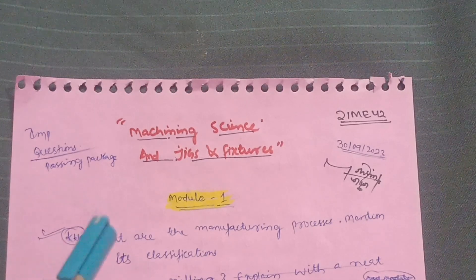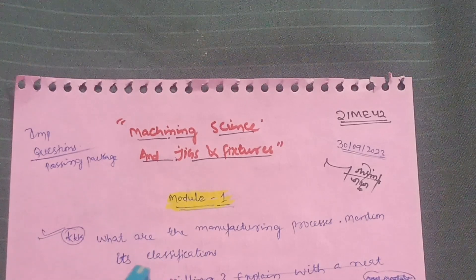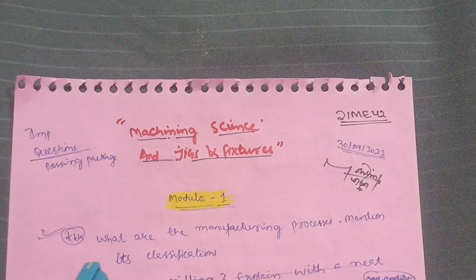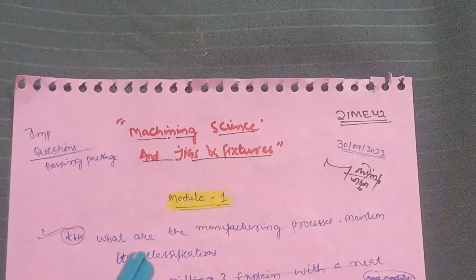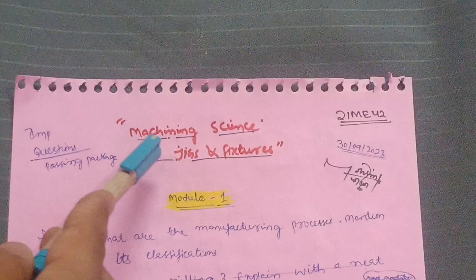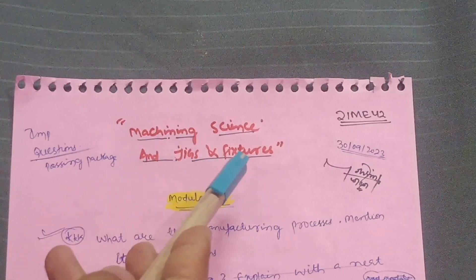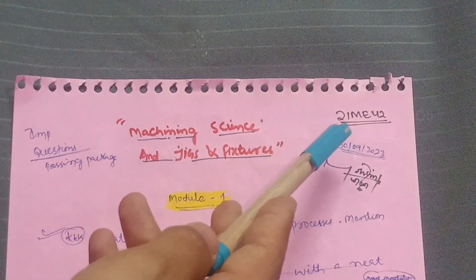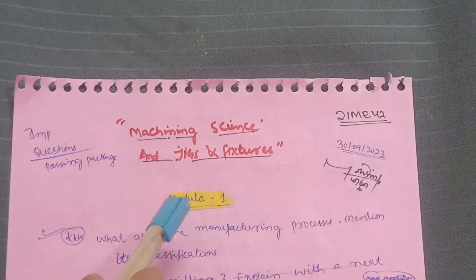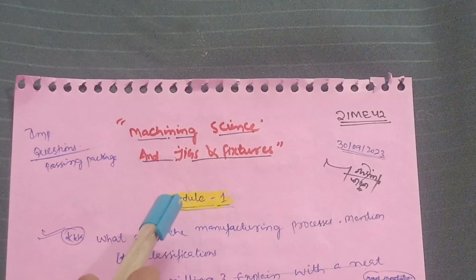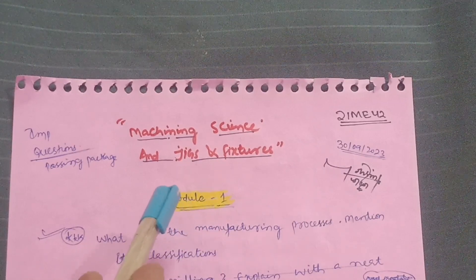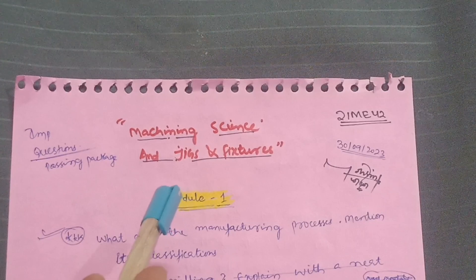Hello everyone, welcome back to my channel. Today I am presenting a passing strategy video for mechanical engineering students. The subject is Machining Science and Jigs and Fixtures, subject code 21ME42. Let me discuss some important questions in this subject and the passing modules.